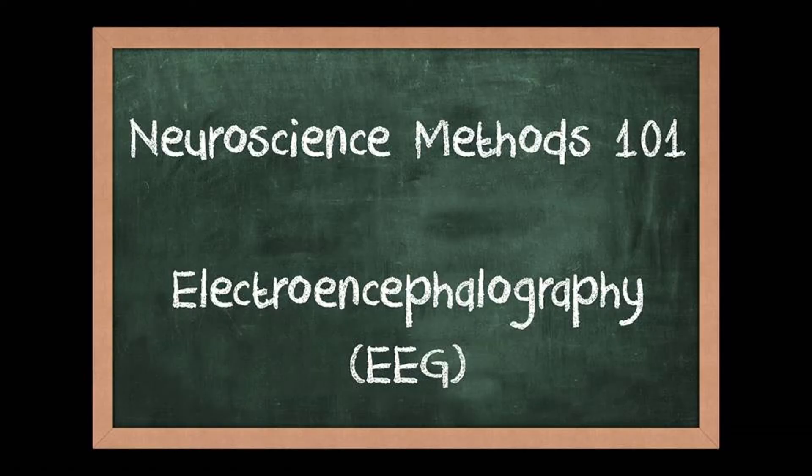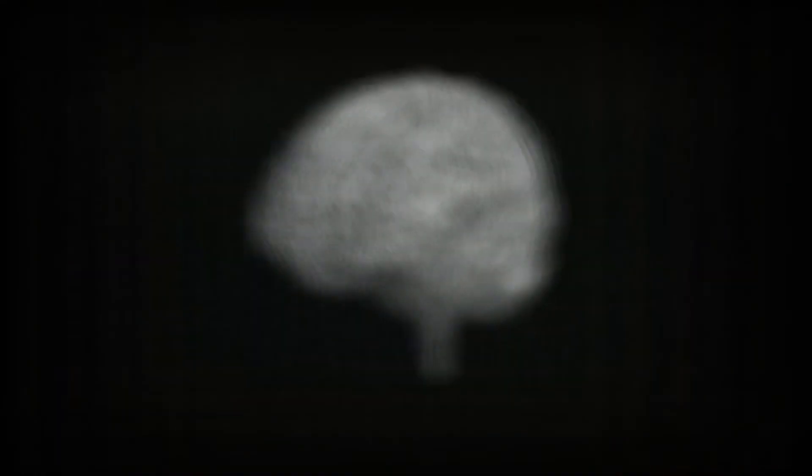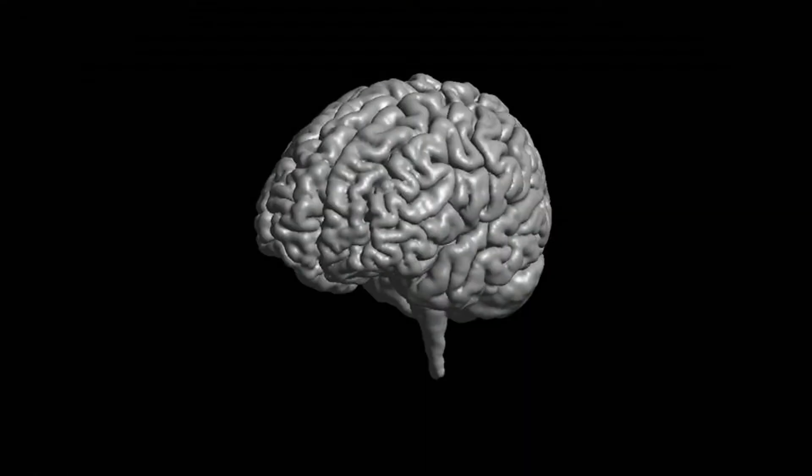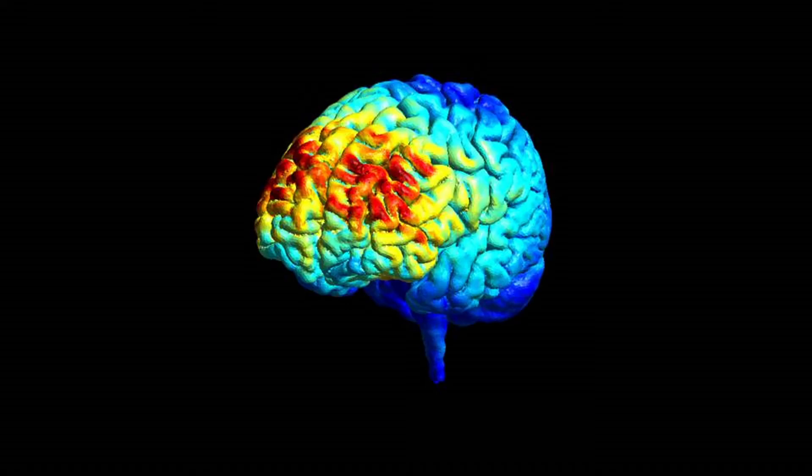Hello and welcome back to the channel. Today, Neuroscience Methods 101, we're going to talk about electroencephalography, or in short, EEG. During the activities of our daily lives, our brain becomes activated all the time, and as neuroscientists we would like to look at the activity of the brain.